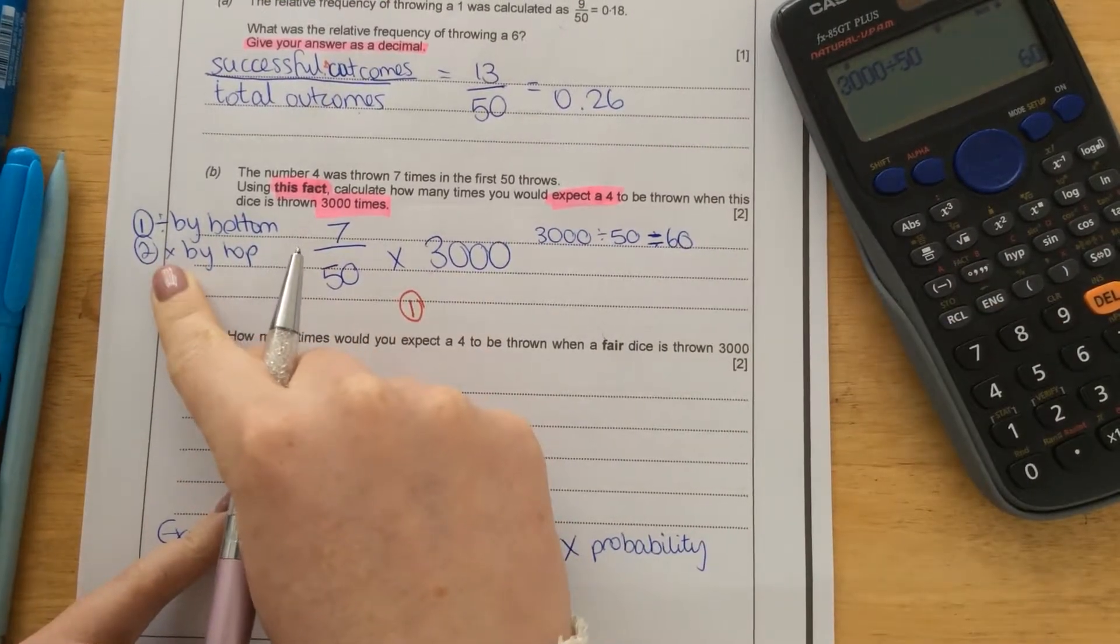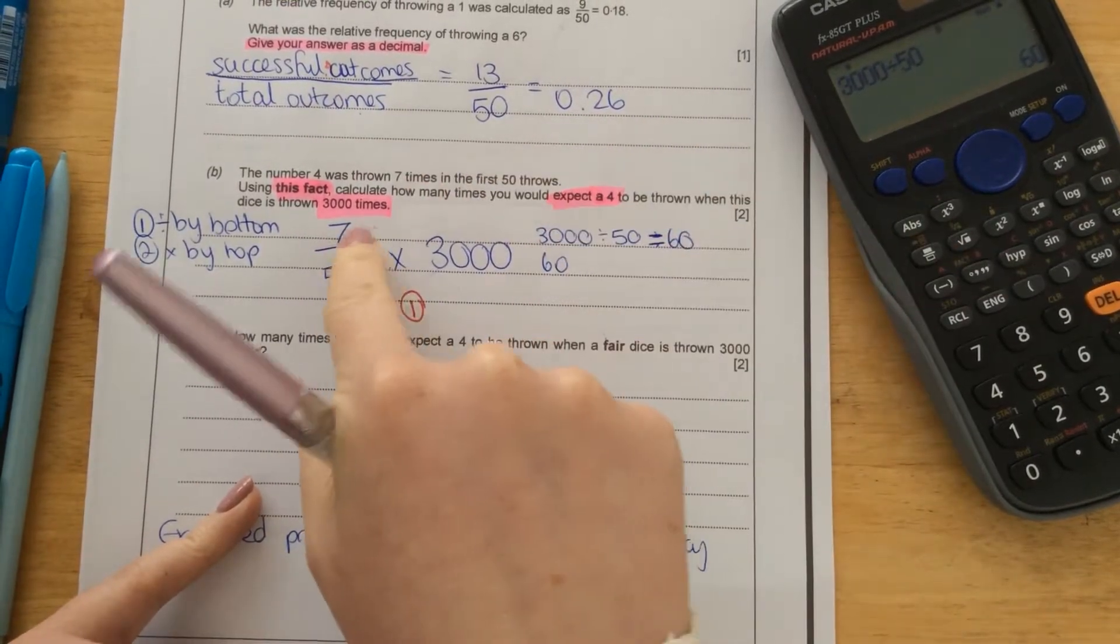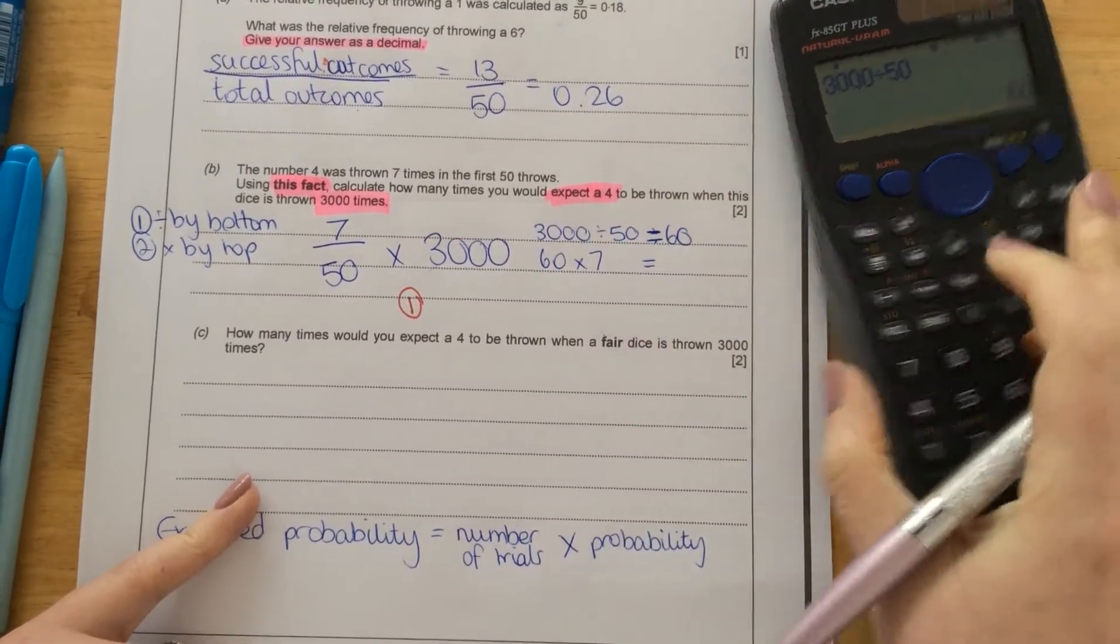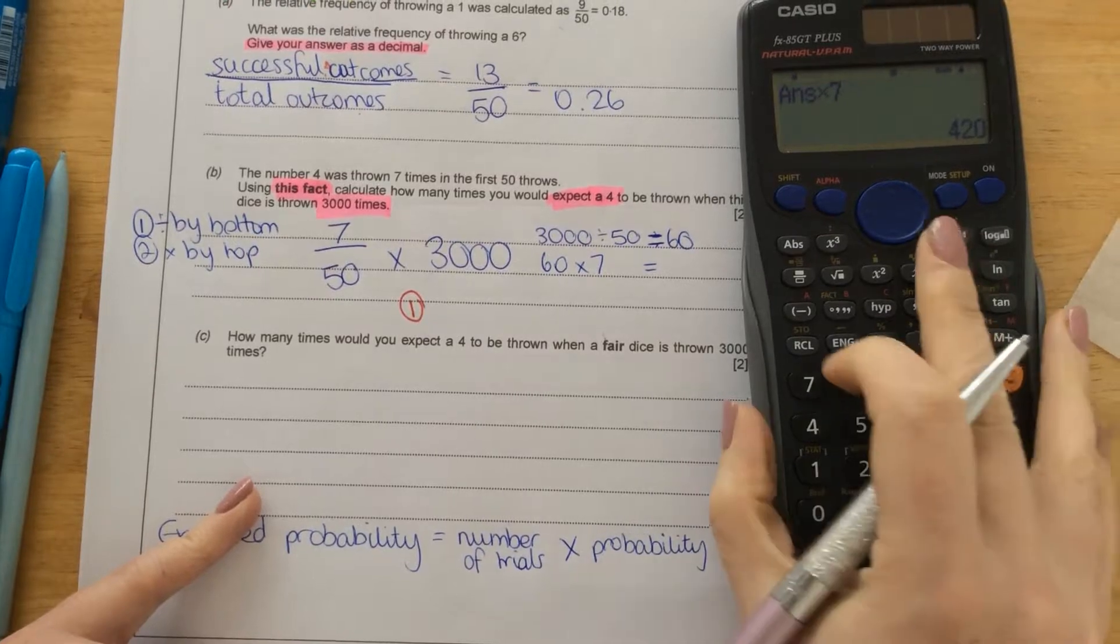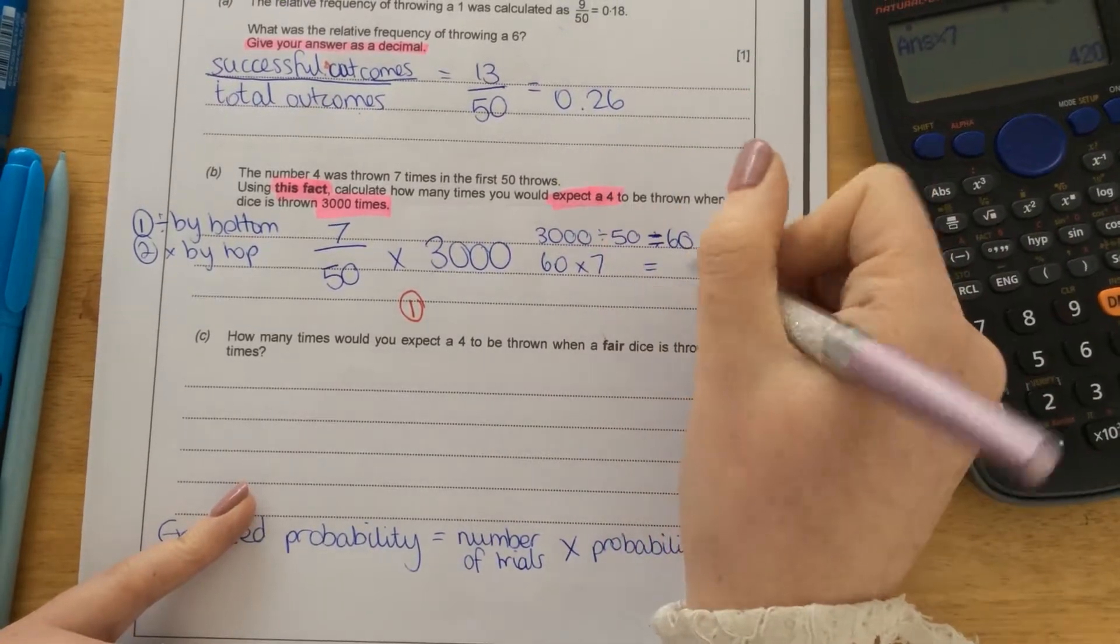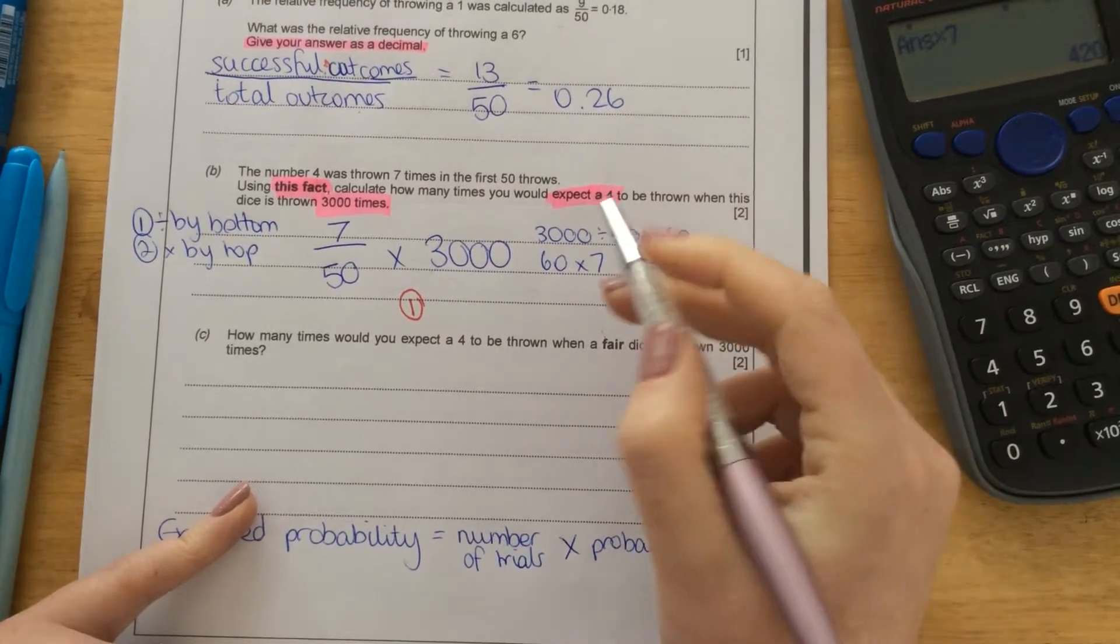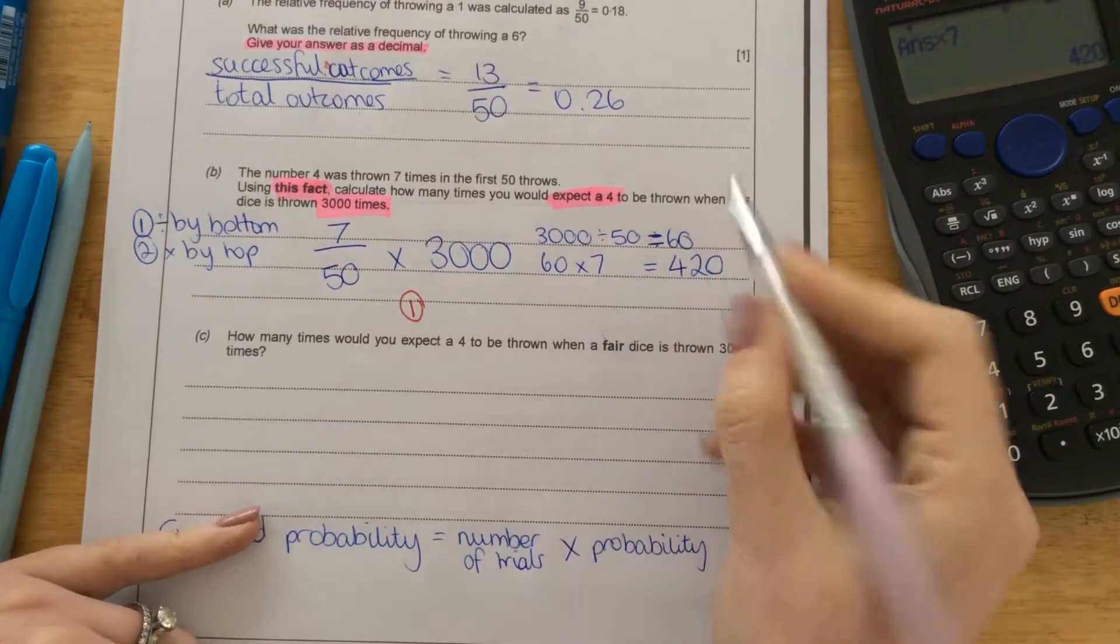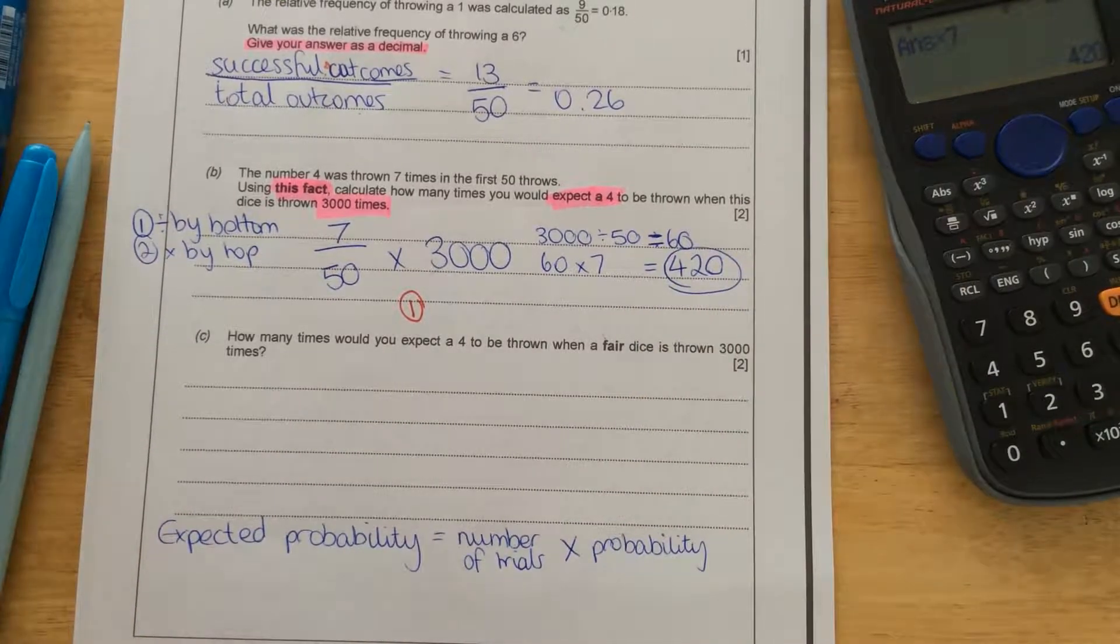And then step 2, with that answer, I have to times by the top. So 60 times by the top number, which is 7. And again, we can use the calculator now. 60 times 7 equals 420. And that would be the number of times you would expect to see a 4. And that would be your final mark for the two marks there.